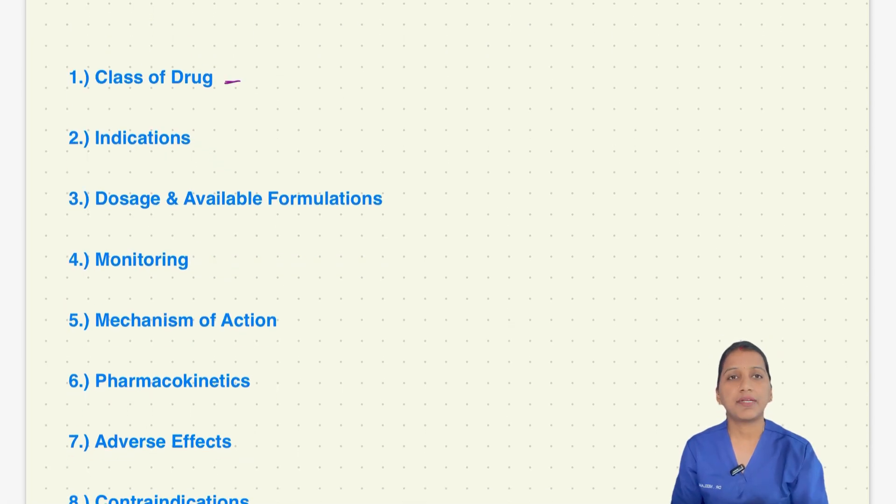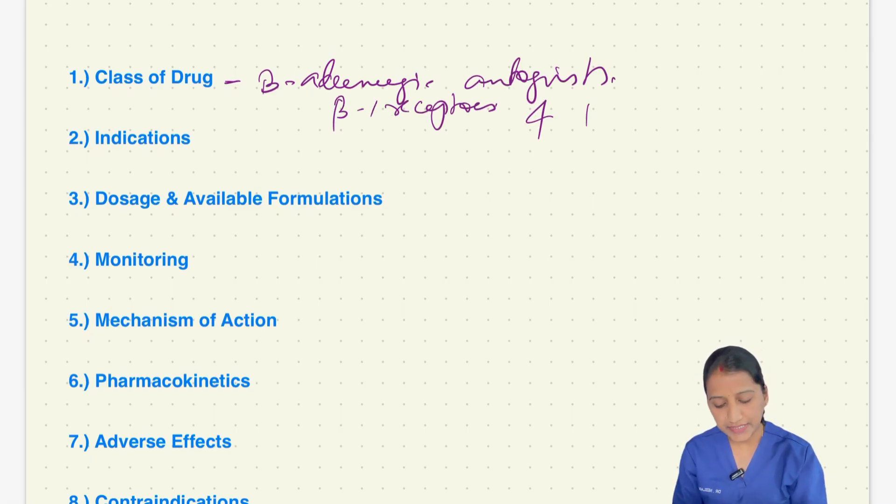Starting with the class of drugs, metaprolol is a beta adrenergic antagonist which mainly affects beta-1 receptors and less affects beta-2 receptors.